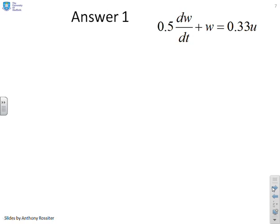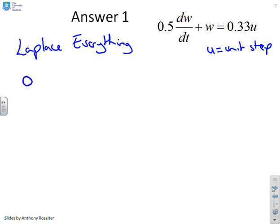First question then. So we've got 0.5dw/dt + w = 0.33u, and you remember we said that u equals a unit step. So again, what we do is we take Laplace of everything and see what we get. So we're going to get 0.5s times W(s) + W(s) = 0.33/s. Now the 0.33/s has come about because you're told that u is a unit step. So the Laplace transform of u is 1/s.